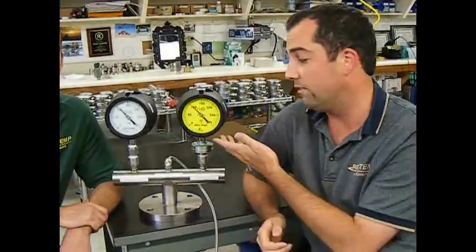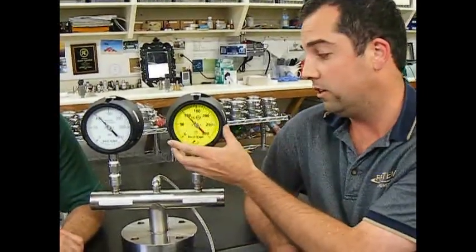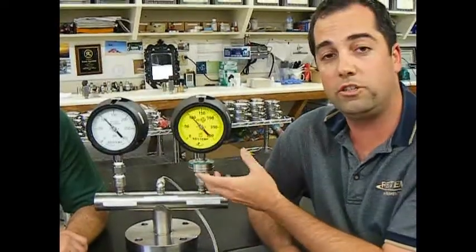with a water snubber on it, which helps dampen pulsation. On the left here you have the RioTemp MS8 all-welded diaphragm seal gauge, which has your standard process gauge attached to a diaphragm seal, whose main role is to isolate the gauge from media that is either hot, corrosive, or clogging.